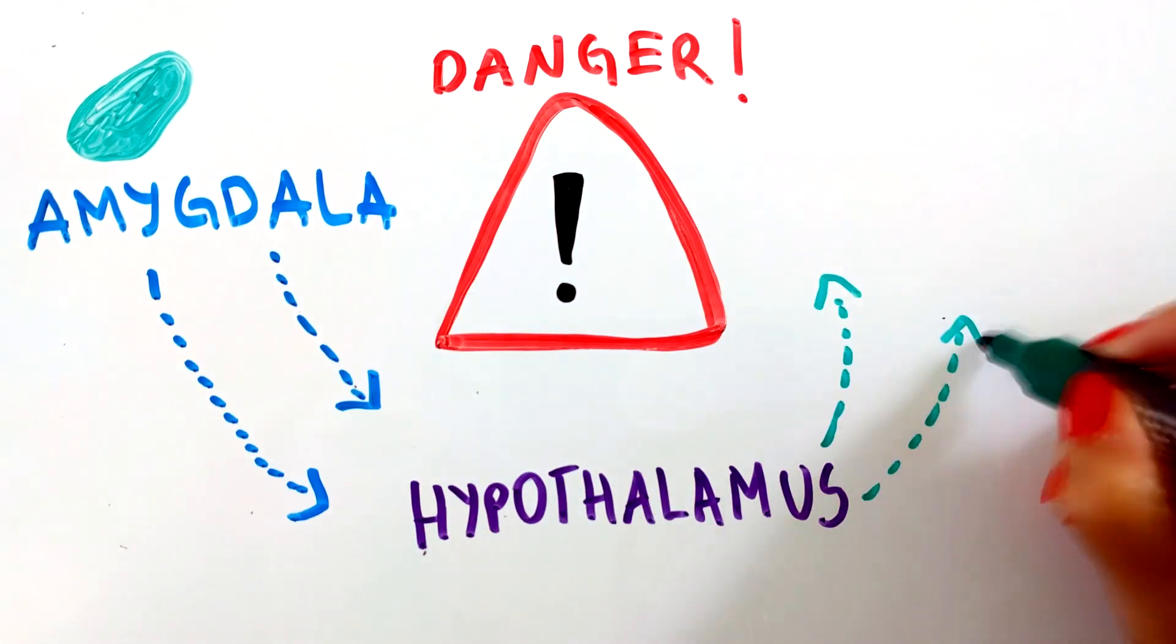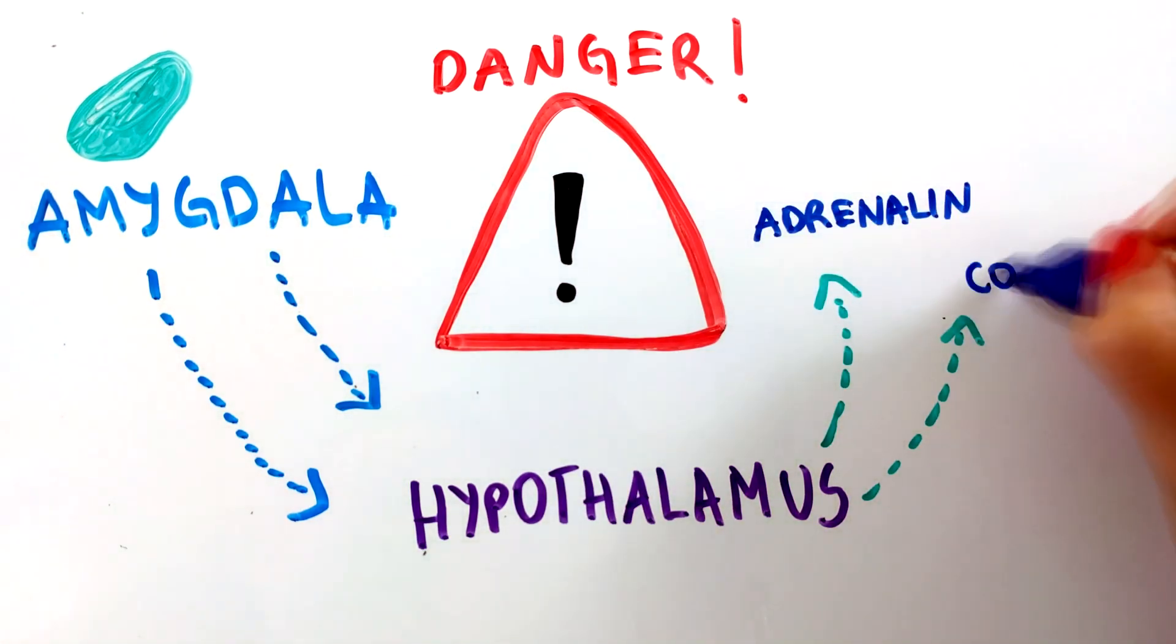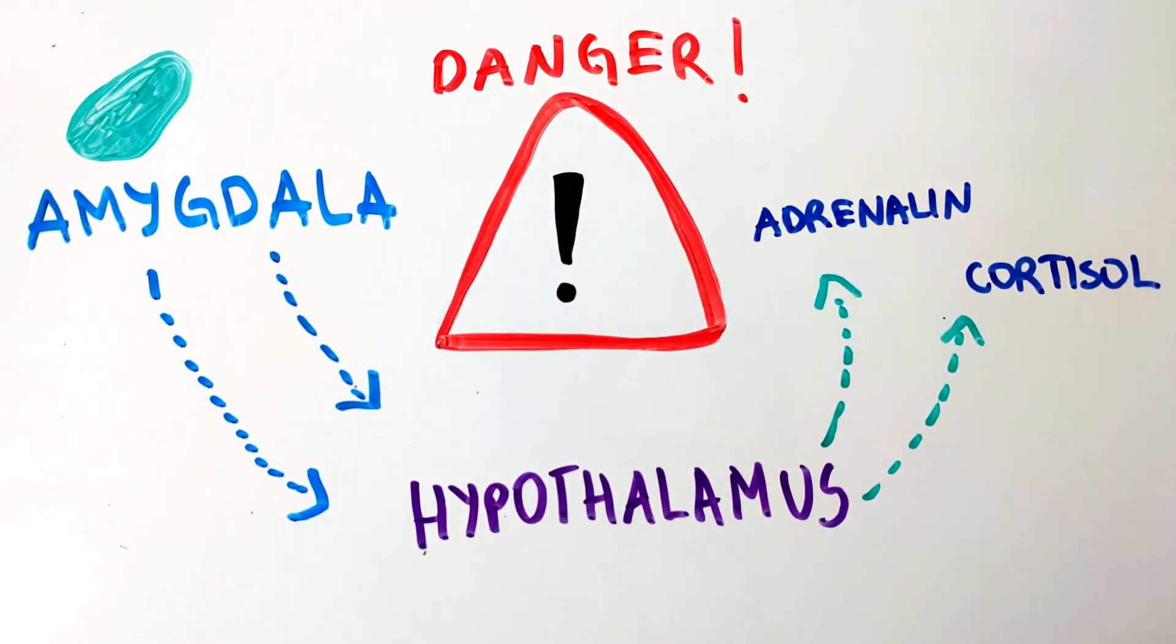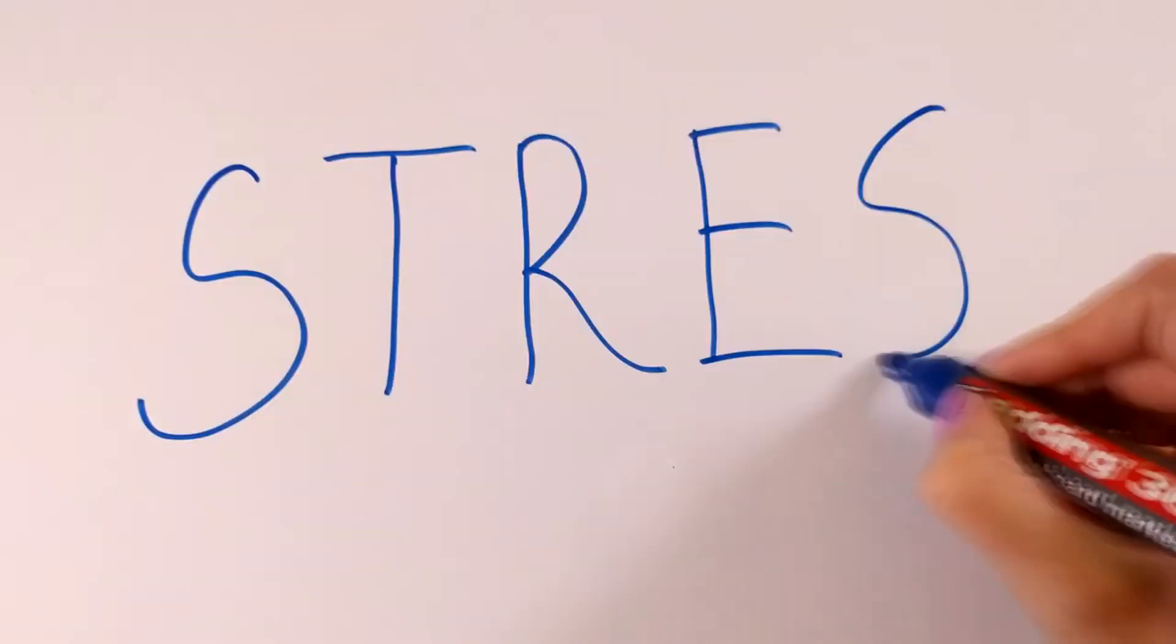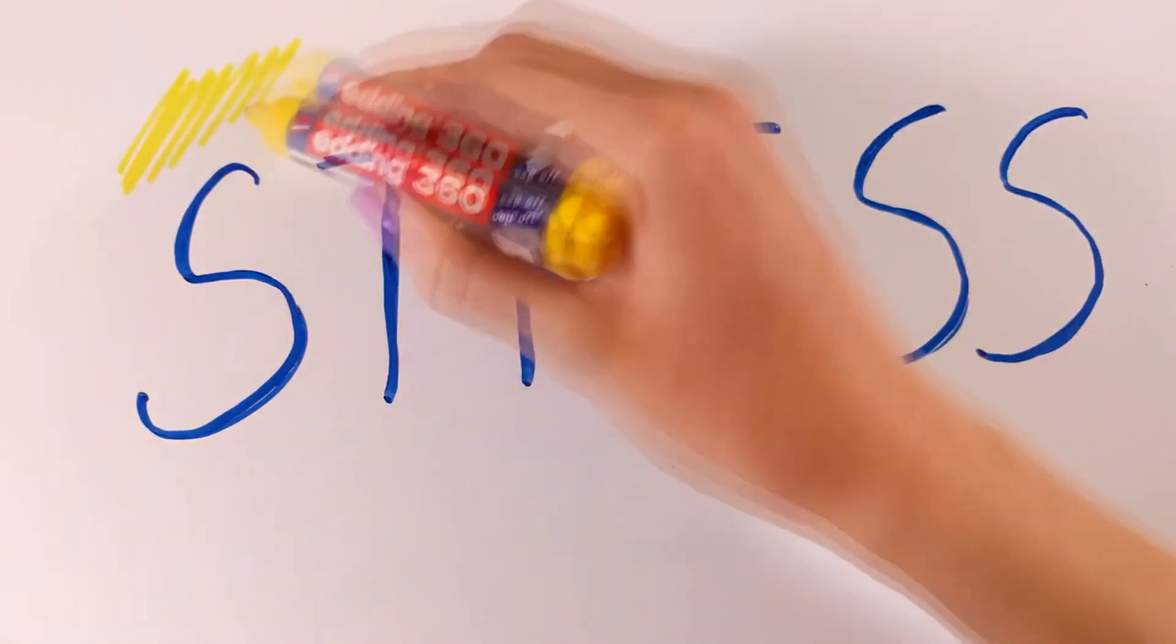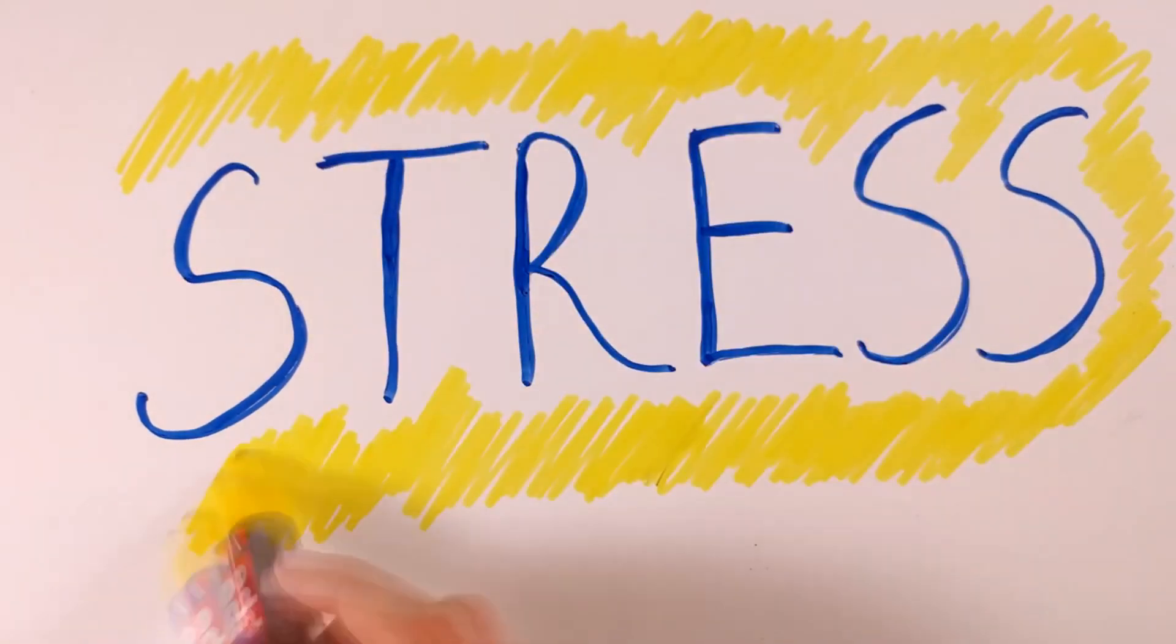This way the amygdala sends signals to the hypothalamus, subsequently activating the fight-or-flight response and the production of stress hormones. If you are not familiar with this, check out our first video where we explain the purpose of a stress reaction.